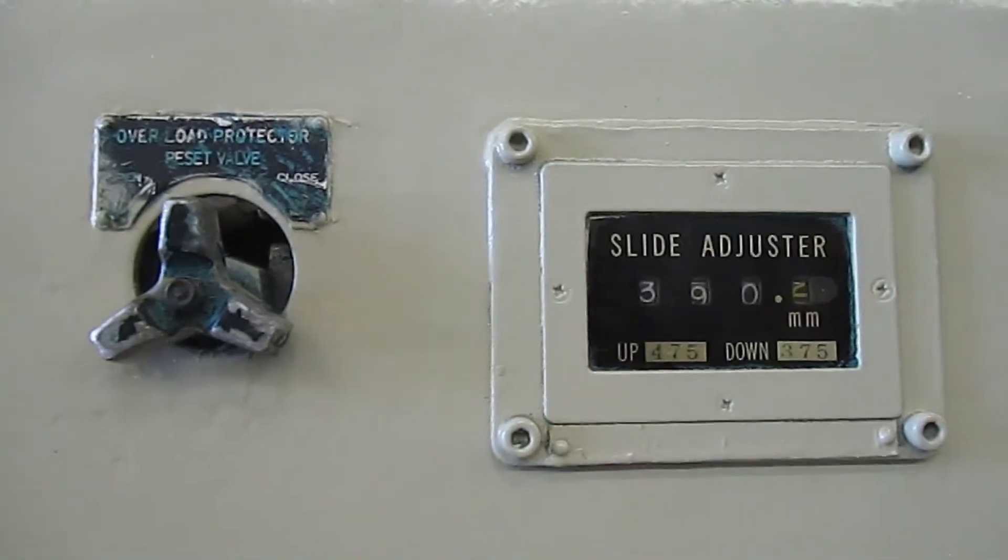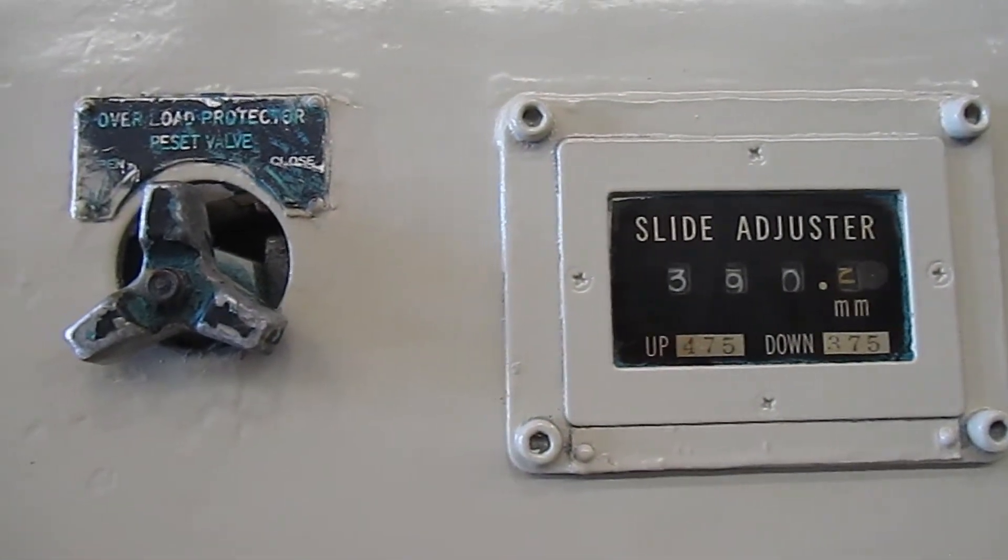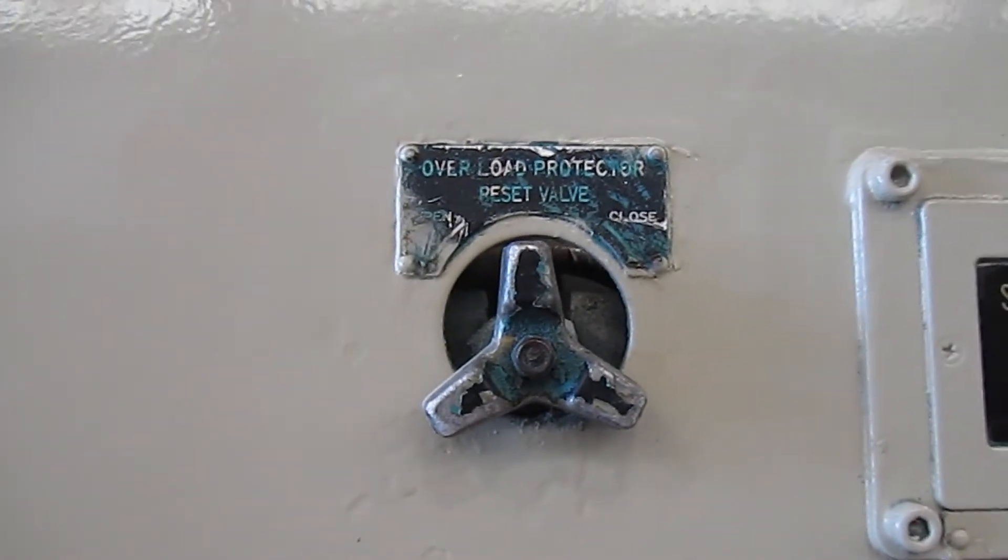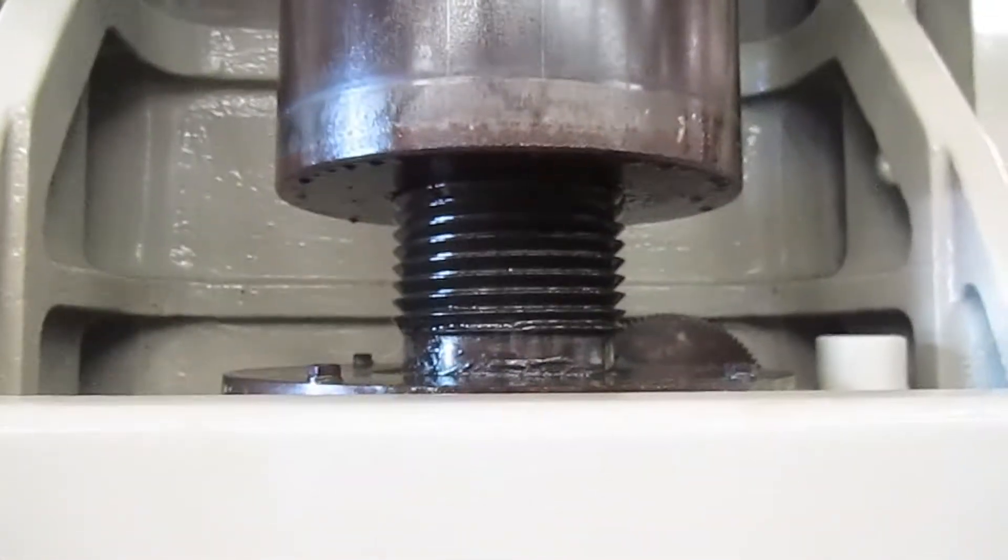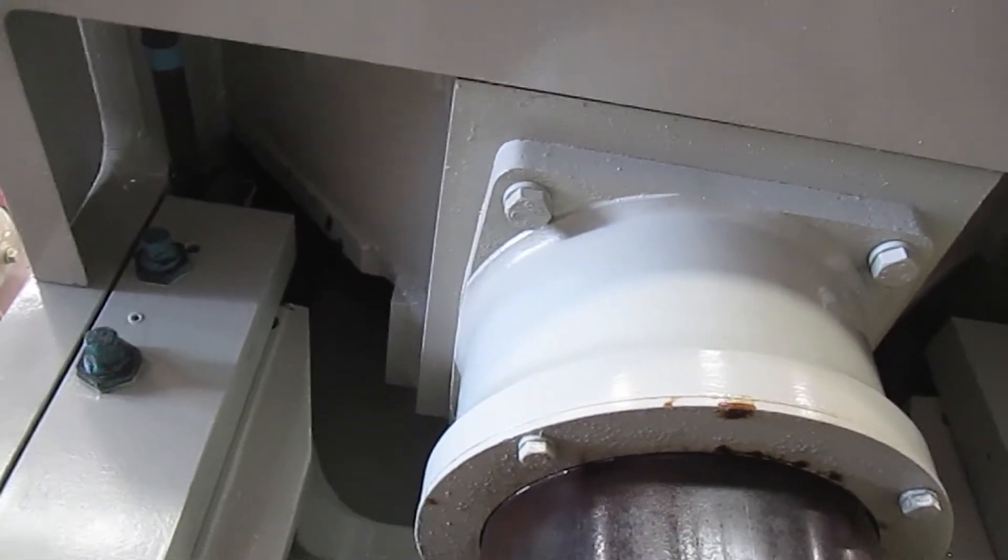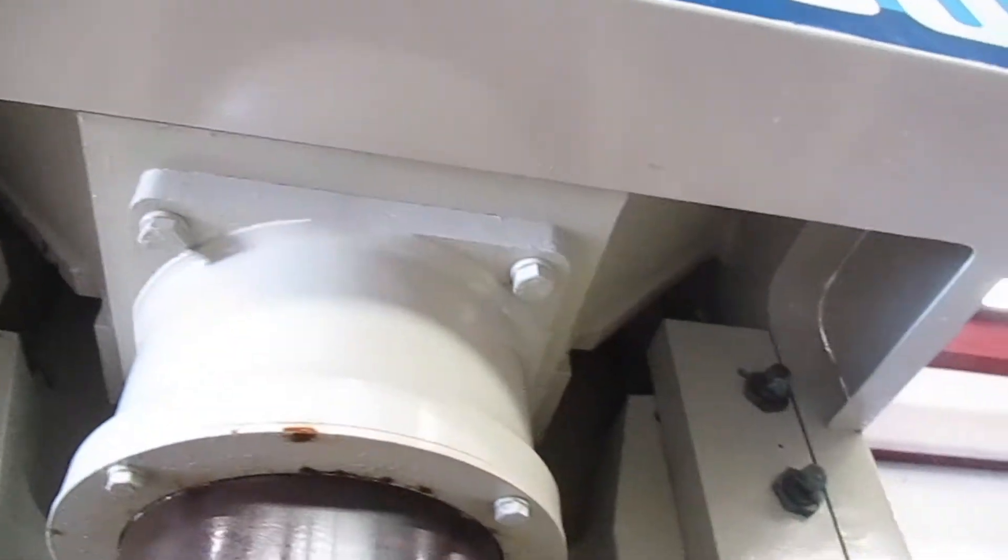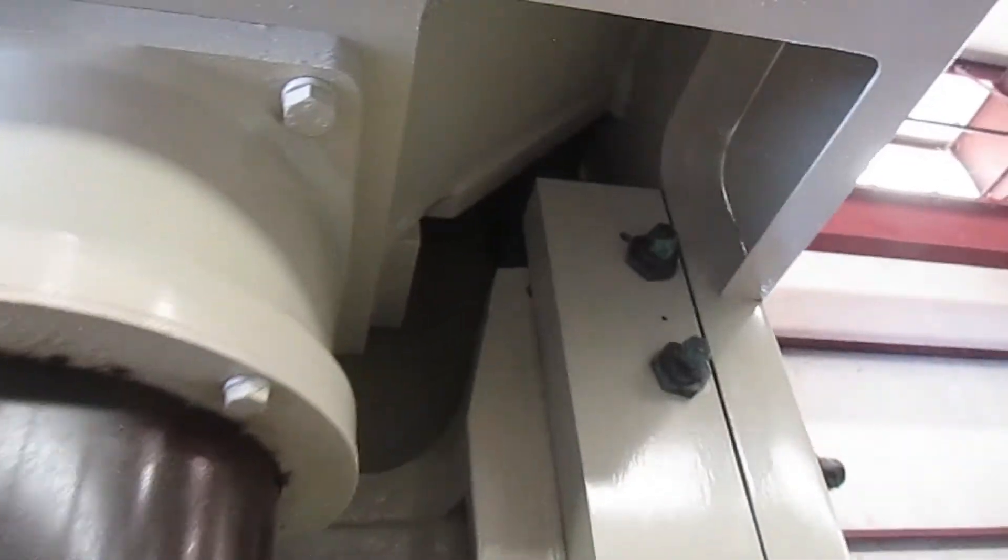Here's the slide adjust indicator and the overload protector reset. Here's your plunger and the screw. This is air counterbalanced. You can see the rod up there and the rod over here.